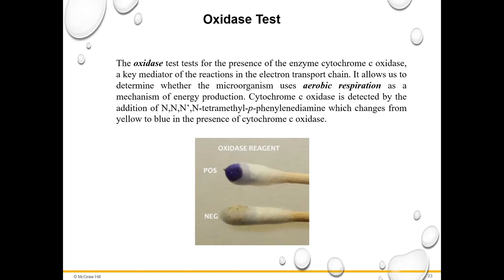The oxidase test is another important one. It's sometimes used for the diagnosis of enteric pathogens — there are very few oxidase-positive enteric pathogens, so a positive result narrows things down quite a bit. The oxidase test tests for the presence of the enzyme cytochrome c oxidase, which is part of the electron transport chain in cellular respiration. It's detected by the addition of a compound that changes color from yellow to blue in the presence of cytochrome c oxidase — that blue color change is a positive result.